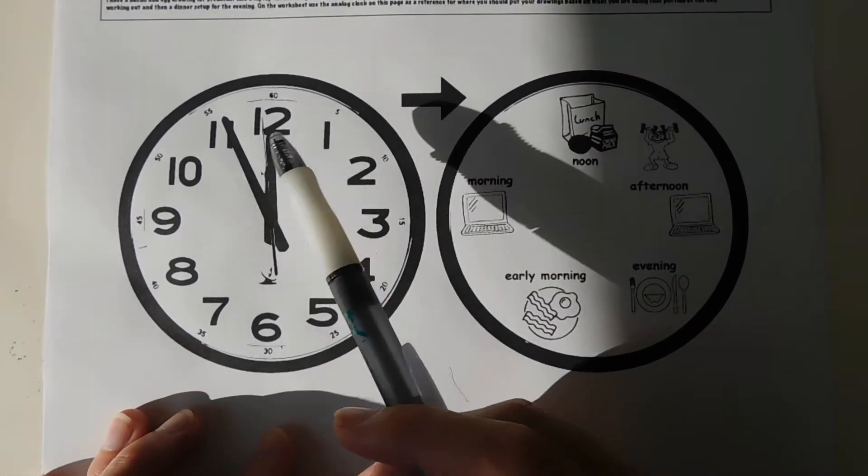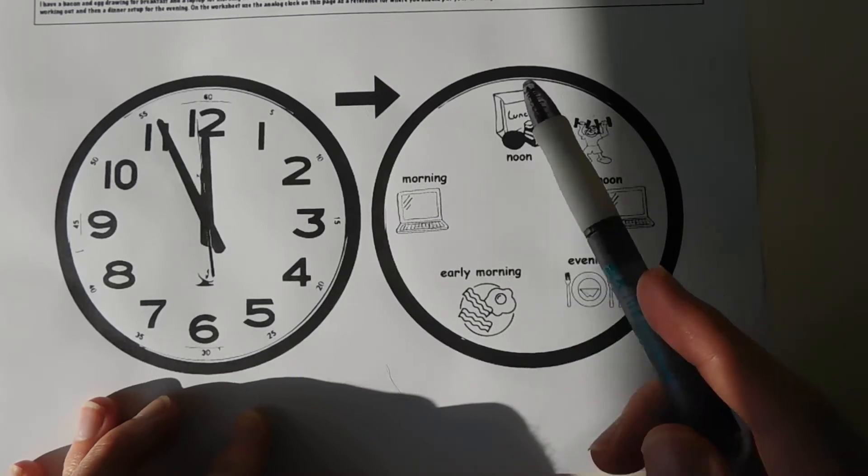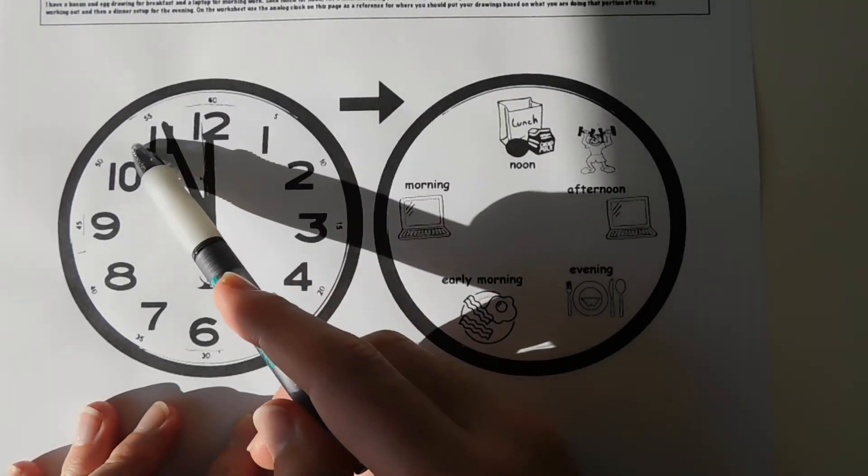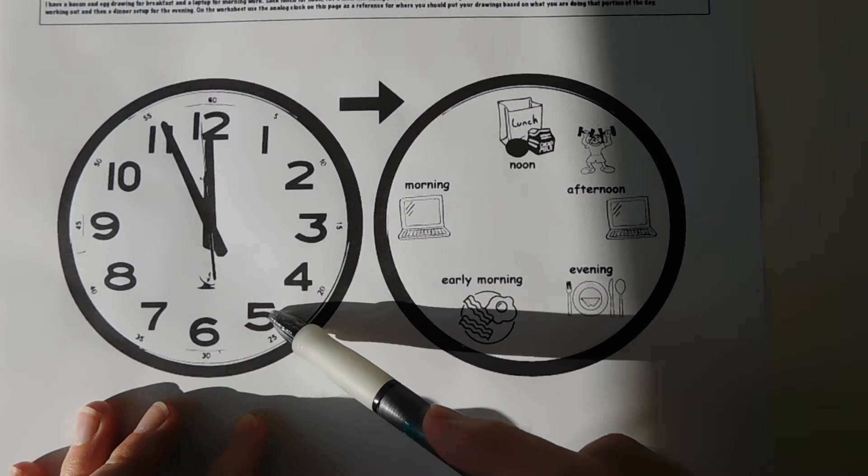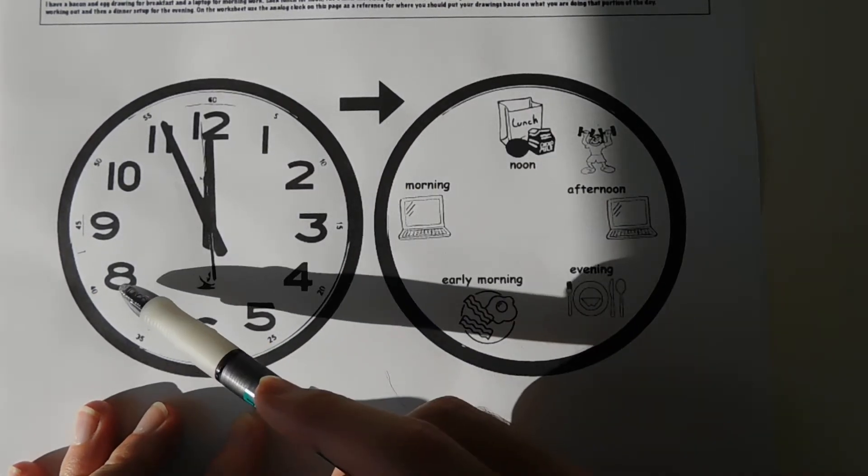First grade, you guys are still learning how to keep time with analog clocks. So I thought it would be fun to have an exercise where you guys, instead of actually trying to tell time with an analog clock, you draw pictures of what you would be doing around those times.